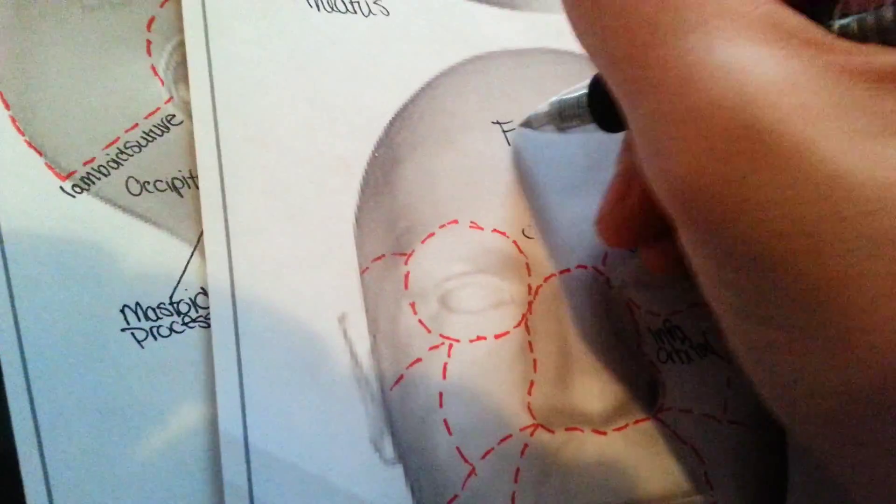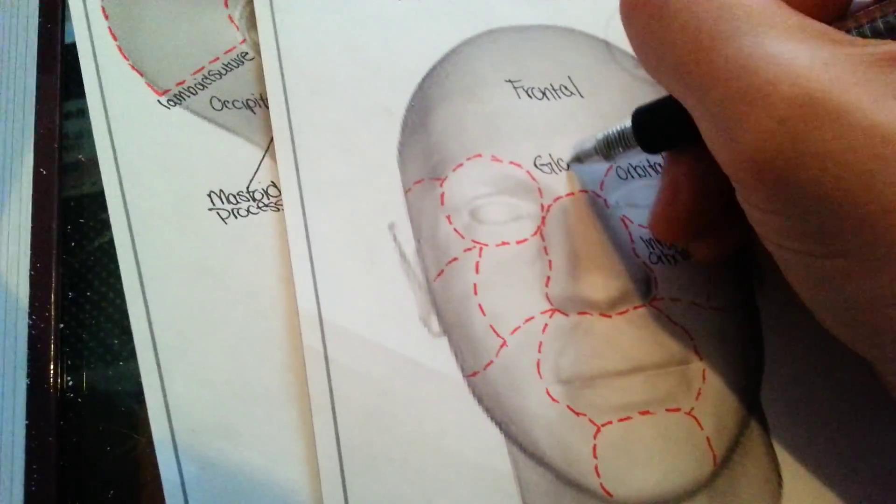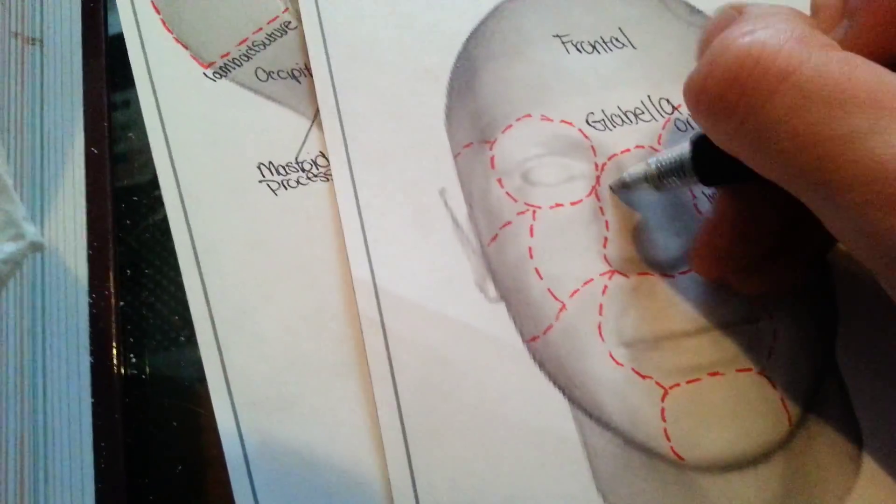Temporal and frontal. It's pretty self-explanatory. The glabella, right over the nose, right between the eyes.